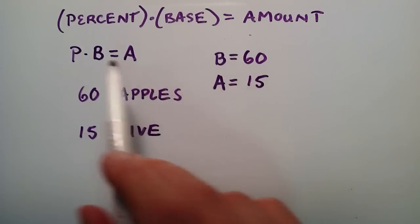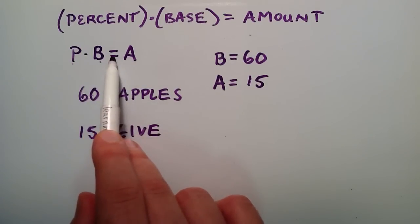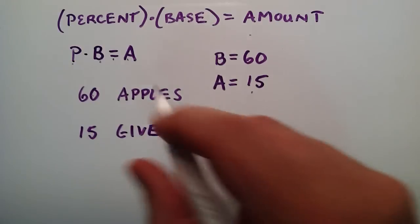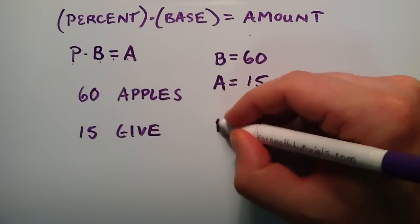So then we want to figure out the percent of apples, the percent of our base, that gave us the amount 15. So basically, we can just simply put it into this equation and then just use some simple algebra to solve this.